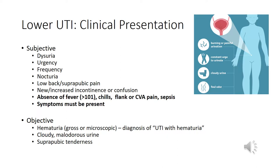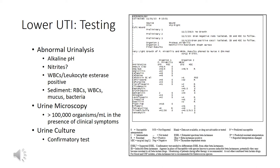Objective findings might include hematuria either grossly or microscopically, cloudy malodorous urine, and suprapubic tenderness. Testing for a lower urinary tract infection will include a urinalysis: pH will be alkaline, there may or may not be nitrites, there will be some leukocyte esterase or white blood cells, and there may or may not be red blood cells. If you do a urine microscopy, bacteria will be present and there may be some red blood cells as well.